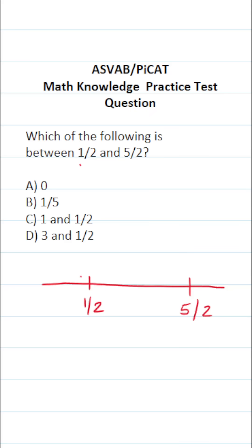And we want to find which of these answer choices is between 1/2 and 5/2. Well, the first thing I'm going to do is say that 1/2 is the same thing as 0.5. 5/2, I'm going to convert to a mixed number. Again, this is 5/2, which I can read as 5 divided by 2.